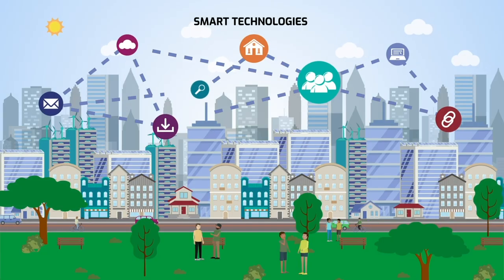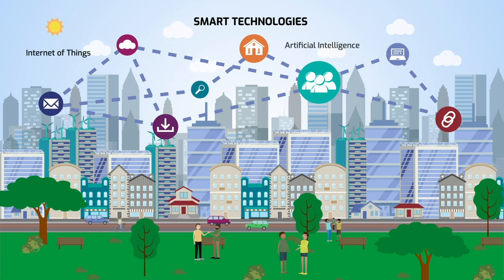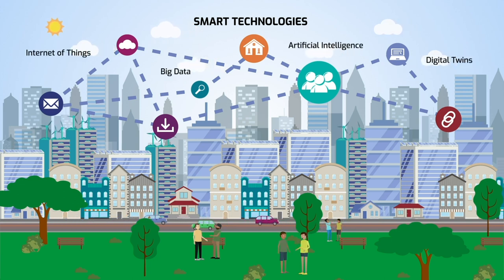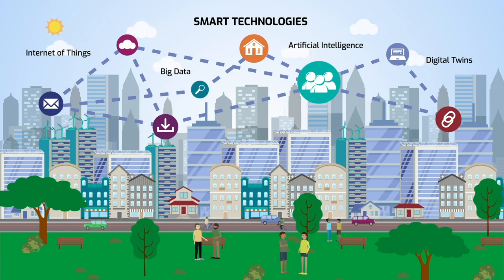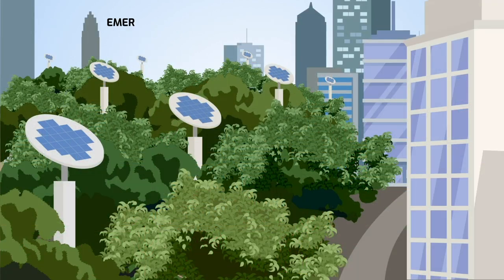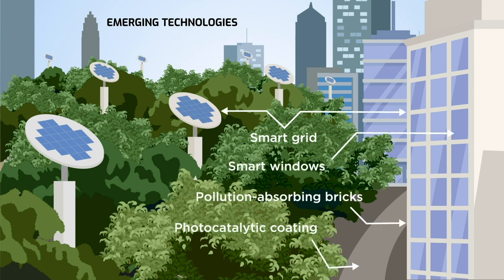Working Group 5 analyzed smart technologies like the Internet of Things and artificial intelligence, which can leverage regenerative design principles for smart, sustainable cities. Emerging ICT and construction technologies have the potential to contribute to regenerative environments.